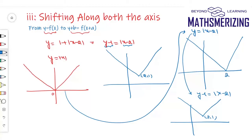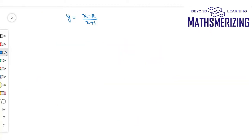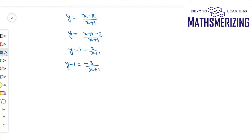Now let's take another example — a rational function. I can write it as (x+1 − 3)/(x+1), or y equals 1 − 3/(x+1). So y − 1 equals −3/(x+1). Here I can identify my basic graph: if I take y and x respectively, my basic graph is xy equals −3, which is a rectangular hyperbola of the second form.